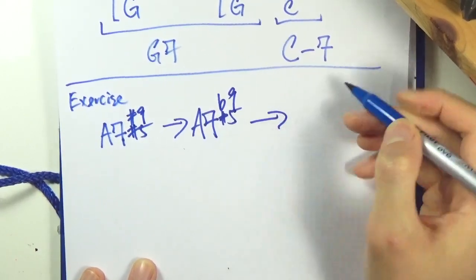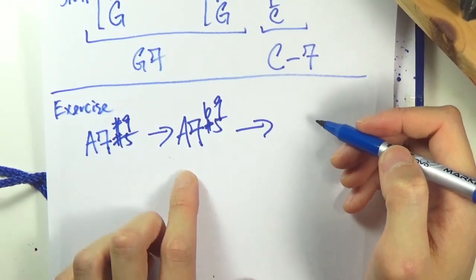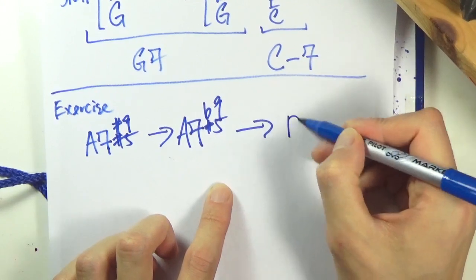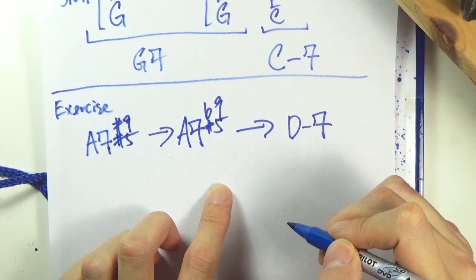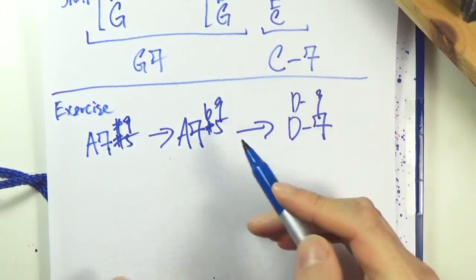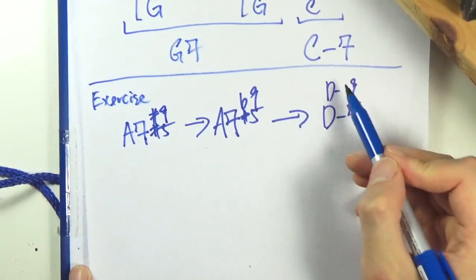Go to flat 9, and then let's go to D minor. In this case, probably D minor 9th because I need to resolve the fifth. So D minor 9th.